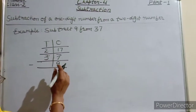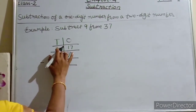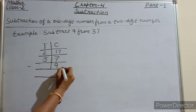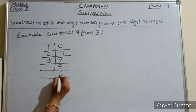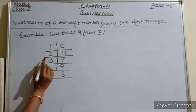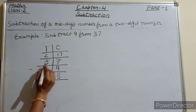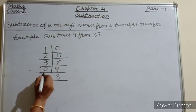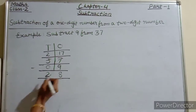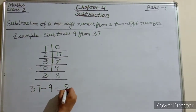Subtract the ones: 17 minus 9 equals 8. Write 8 under the ones column. For the tens: 2 minus 0 equals 2. Write 2 under the tens column. So 37 minus 9 equals 28.